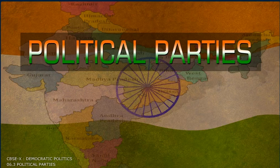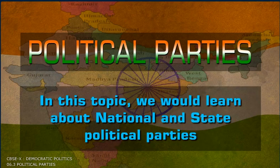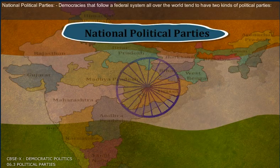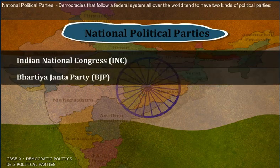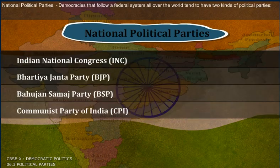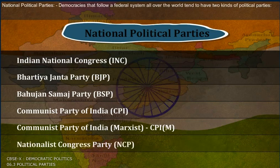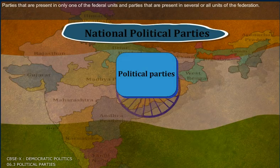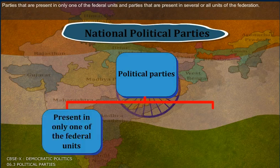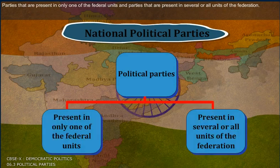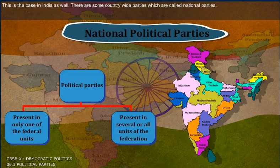In this topic, we would learn about national and state political parties. Democracies that follow a federal system all over the world tend to have two kinds of political parties: parties that are present in only one of the federal units, and parties that are present in several or all units of the federation. This is the case in India as well.